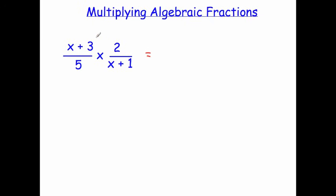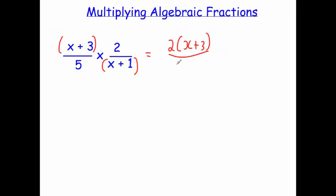Now in this example we've got (X + 3) over 5 times 2 over (X + 1). We've got more than one term in the numerator and denominator, so I'm going to check if I can factorise these. X plus 3 — no, can't factorise it. X plus 1 — no, can't factorise it. So I'll put them in brackets and multiply then cancel down if possible. Multiplying gives 2(X + 3) on the numerator and 5(X + 1) on the denominator. The 2 and 5 won't cancel, and X + 3 and X + 1 are not the same and can't be factorised. So we can't cancel those down — that's our final answer.